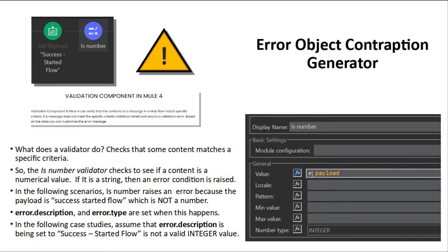How errors will be generated: we will do something that causes a validator to throw an error. A validator checks that some content matches a specific criteria. The IsNumber validator we will use checks to see if the content of a value is a numerical one. If it is anything other than an integer value, an error condition will be raised. We will have set the value being checked to a string equal to SUCCESS STARTEDFLOW. This fails the check. When an error condition is raised, an error object is created that contains the error description and error type. Assume that the error description is set to 'SUCCESS STARTEDFLOW is not a valid integer value.'